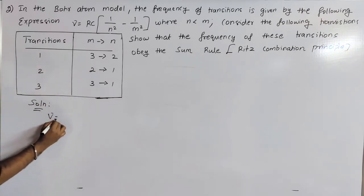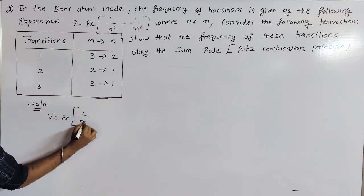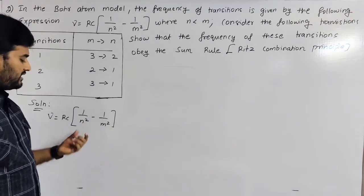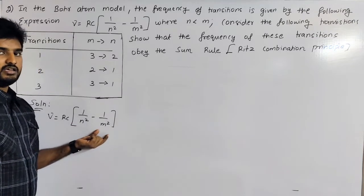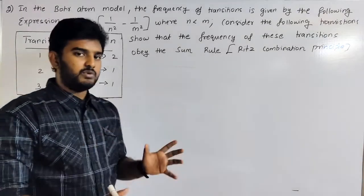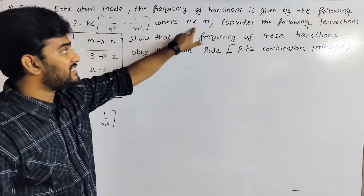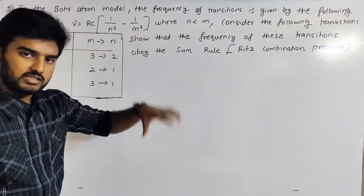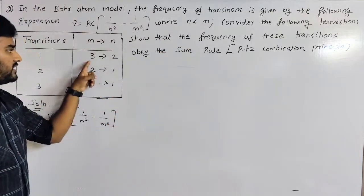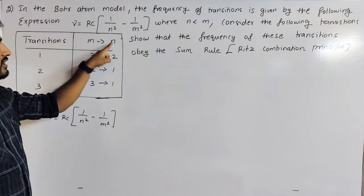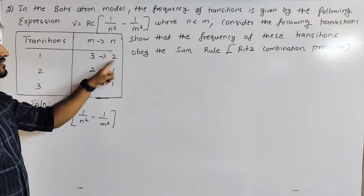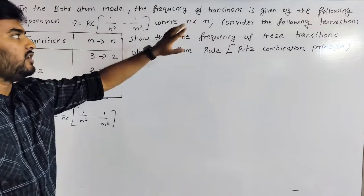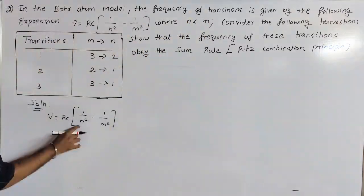The expression is: nu equals RC times (1/n squared minus 1/m squared). Here n and m represent energy states — n is the ground state (lower energy) and m is the first excitation state (higher energy), where n is lesser than m, so n is the lower state and m is the higher state.